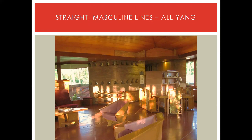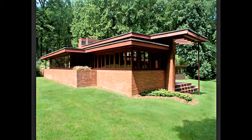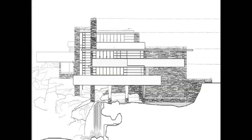Straight masculine lines, all yang — back at the Palmer House, not a curve in it, not even a soft edge or corner. It's very masculine. Yang is masculine, yin is feminine. It would be nice to have a counterpoint to these straight lines. Mr. Wright sometimes incorporated a curved planter. If we can incorporate some curve somewhere here and there, some softer edges throughout the design, just something to counterbalance all the straightness might be beneficial.